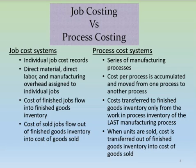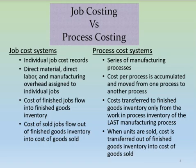Let's take a brief look at the differences between job order costing and process costing. In job order costing, we had a single work in process inventory control account supported by individual job cost records for each job. Direct materials, direct labor, and manufacturing overhead were assigned to individual jobs, and when a job was finished, those costs flowed directly into finished goods inventory, and when sold, into cost of goods sold.